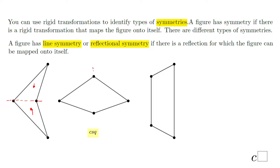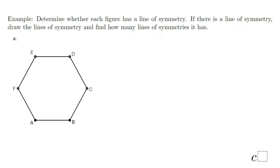Very similar here — this is the line of symmetry. If you reflect these sides over that line, or this side over the other line, it maps onto itself. And here the line of symmetry goes through the middle of the two sides of this quadrilateral, this trapezoid. So this is about reflection symmetry.